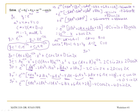So a is 1 sixth, b is 0, c is 0, and d is 1 eighth. My particular solution is 1 sixth x cubed e to the negative 2x plus 1 eighth sine 2x.